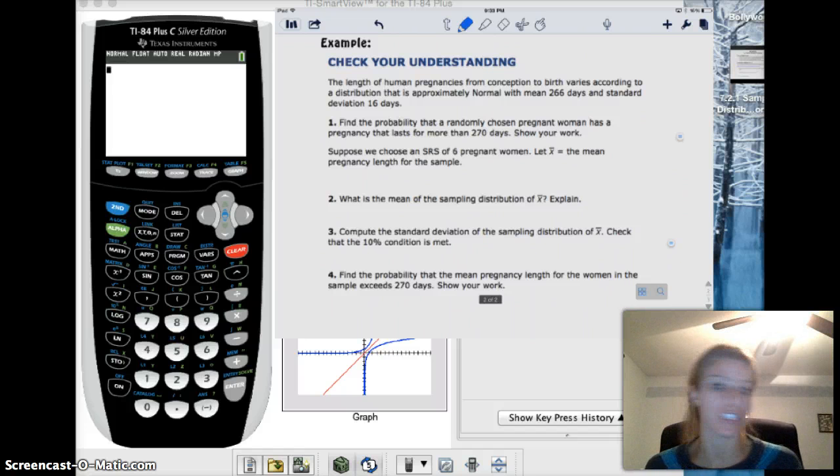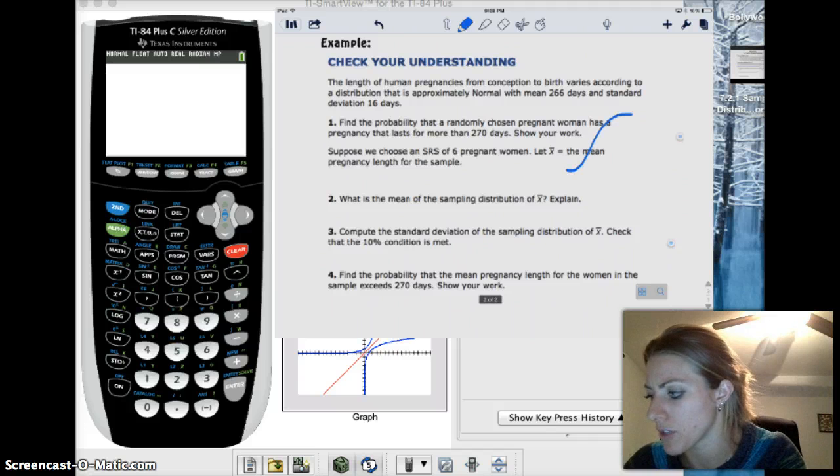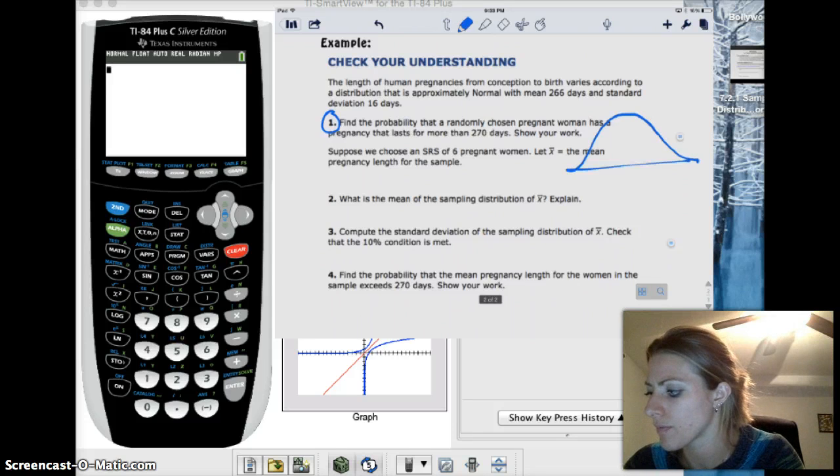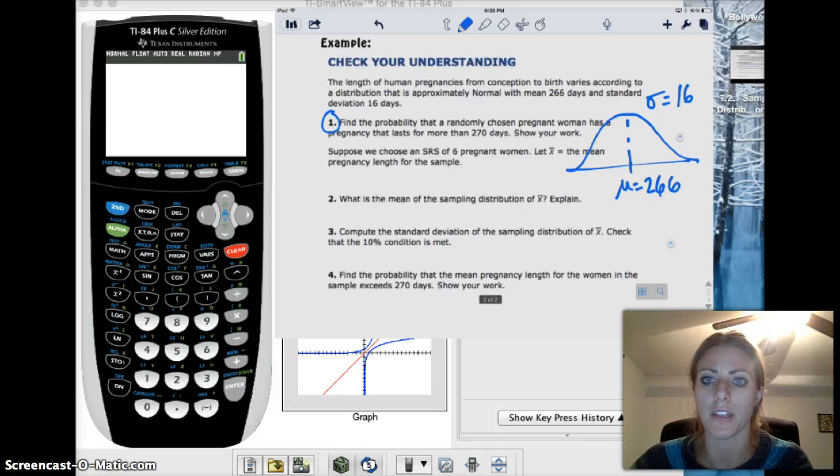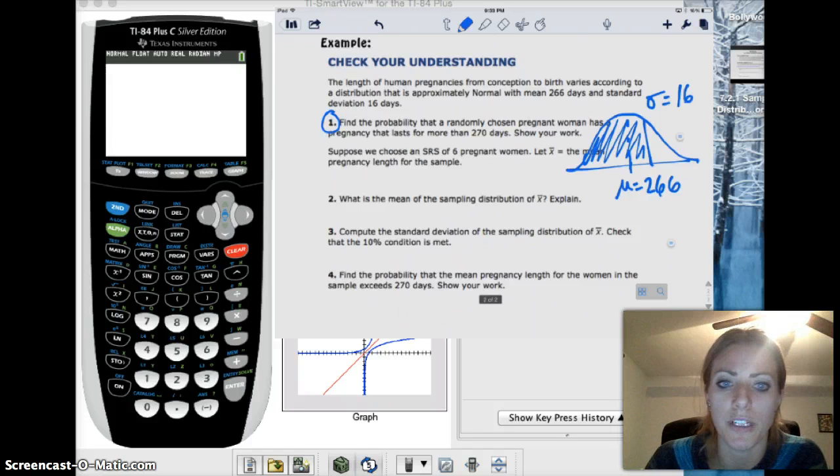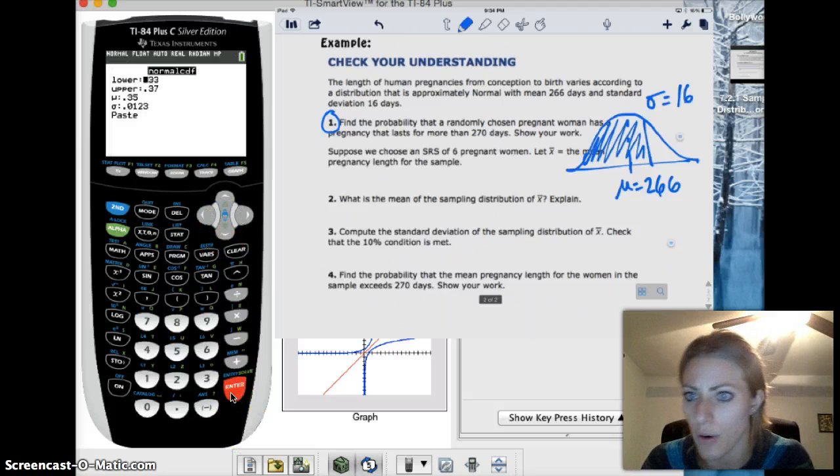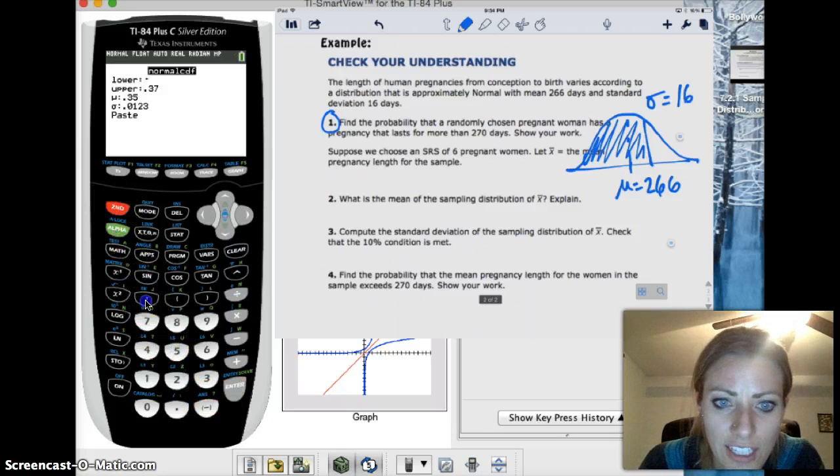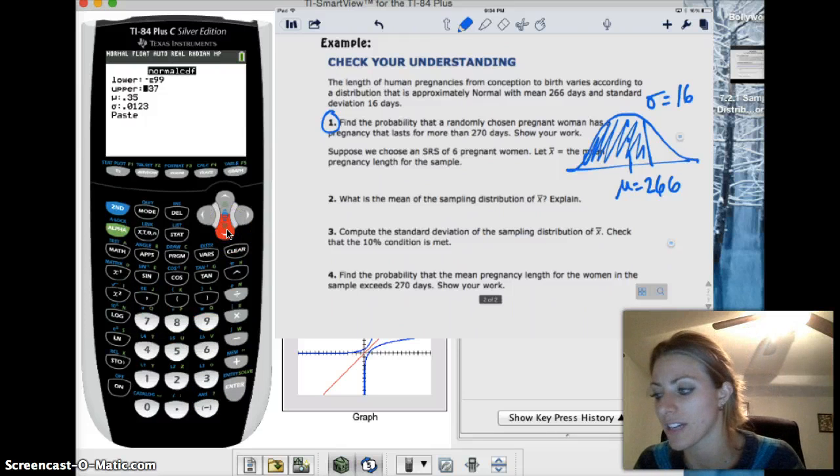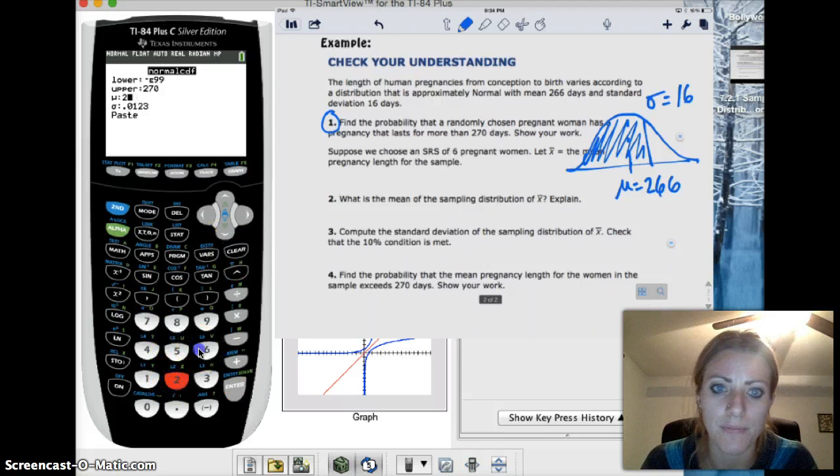Eventually we're going to get to the point where we know only stuff about samples and we need to figure out things about the population, but we haven't gotten to that point yet. And so right now we're saying, okay, we know it's normally distributed, it's got 266 days, standard deviation of 16 days. So it says, Find the probability that a randomly chosen pregnant woman has a pregnancy that lasts for more than 270 days. Then show your work. Then the next question is, suppose we choose a simple random sample of six pregnant women, and we want x-bar to be the mean pregnancy length for the sample. Let's take a look at how to answer these questions. So for the first question, they're just asking about a randomly chosen person. So we're looking at the population as a whole. So we're looking at that actual normal distribution, and this is for number one, the normal distribution with the mean of 266 days, standard deviation is 16 days.